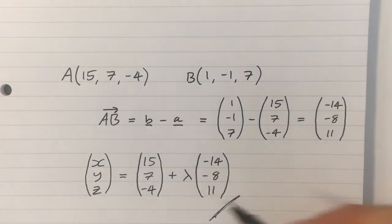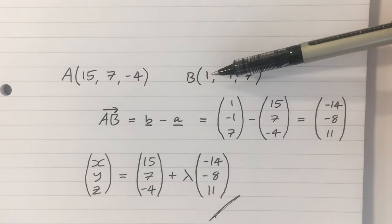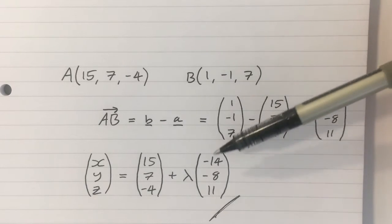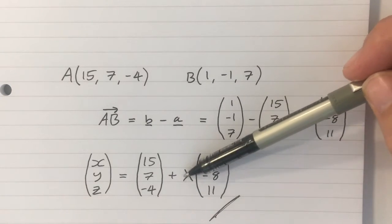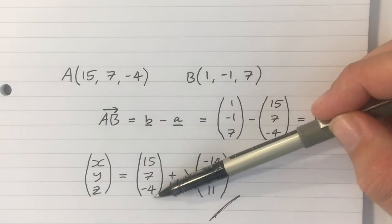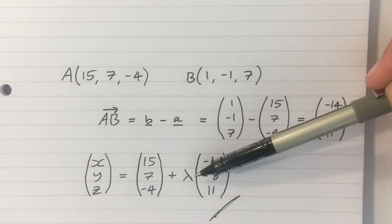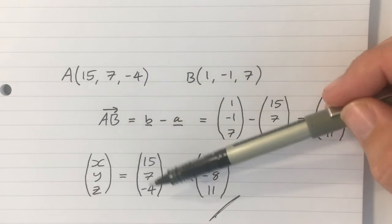That is a line that goes through the points A and B. You can tell it goes through the points A and B, because when lambda is 0, you can see that X, Y, Z is equal to A. And when lambda is 1, then you'll get that X, Y, and Z are equal to B.